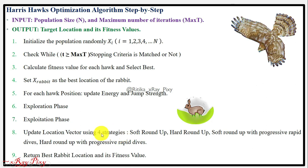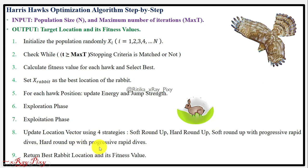Position updates use four strategies: soft roundup, hard roundup, soft roundup with progressive rapid dives, and hard roundup with progressive rapid dives. At the end, we return the best rabbit location and its fitness value.